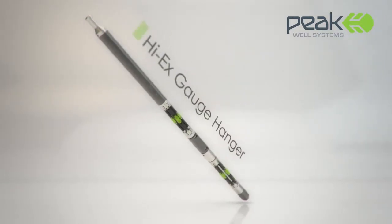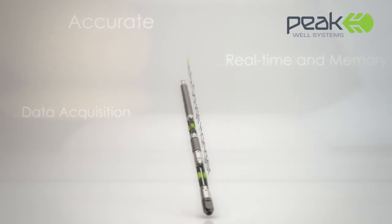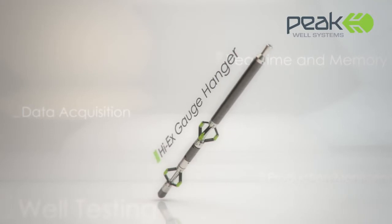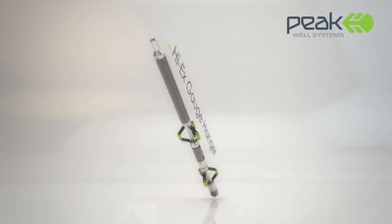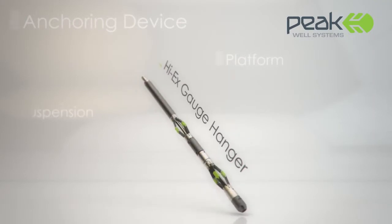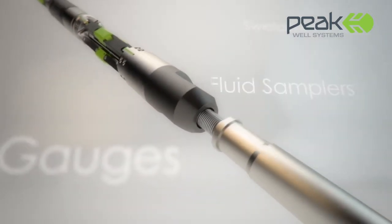The Hi-X Gauge Hanger enables accurate real-time and memory data acquisition during well testing and production monitoring, particularly in non-monobore wells. It can also be deployed as an anchoring device to provide a platform for or suspension of other downhole equipment such as swellable packers and fluid samplers.